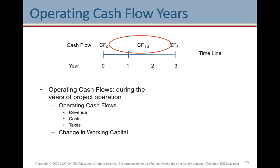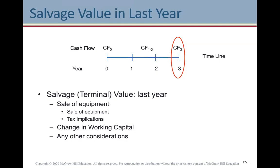Operating cash flows are cash flows that occur during the years of the project's operation — revenues, costs, and taxes. Changes in working capital also fall under that. You'll often see salvage cash flows, also called the terminal value of the equipment, which occurs when we sell equipment at the end of the project. There are tax implications on that as well, and in the last year there could be additional working capital changes and other considerations to include in our estimates.